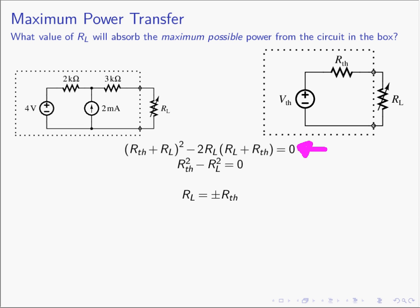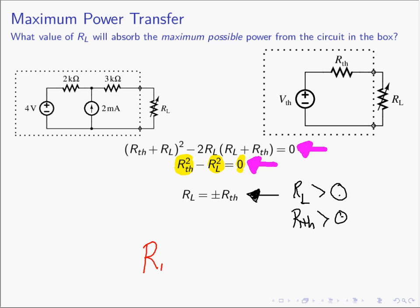Taking the terms in the fifth equation, multiplying through, and collecting terms gives the sixth equation. The sixth equation says that R_th squared minus R sub L squared must equal zero. That occurs when R sub L equals plus or minus R_th. But since resistors must be greater than zero — we can only have positive resistors — the final result is that the maximum power will be absorbed by R sub L when R sub L equals R_th.